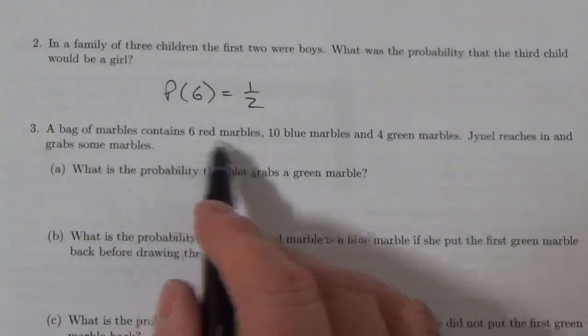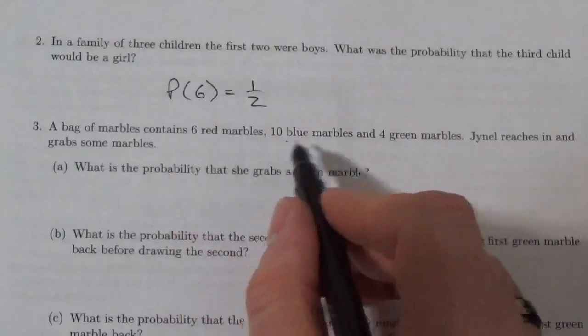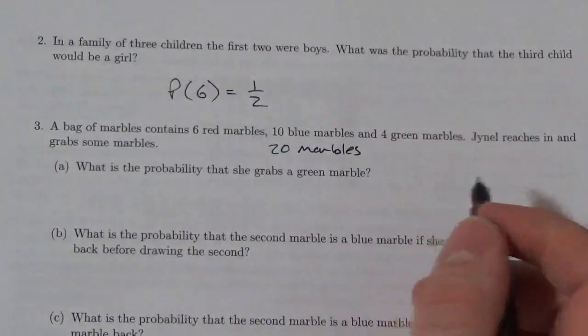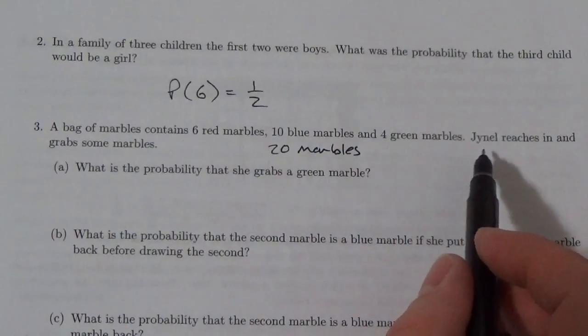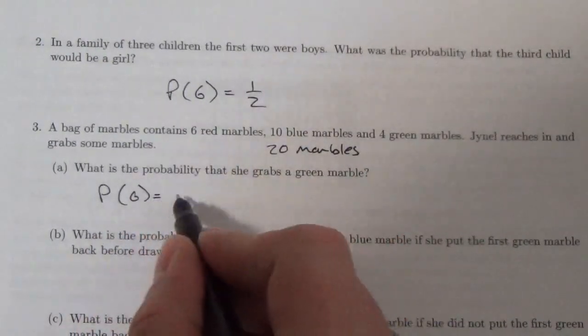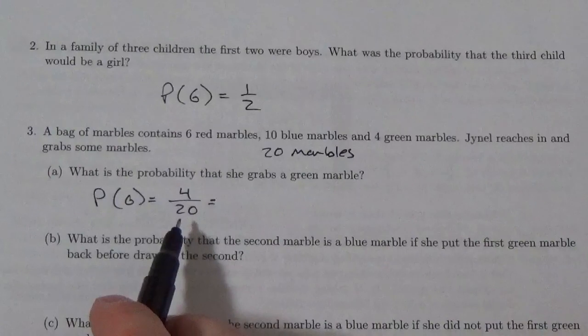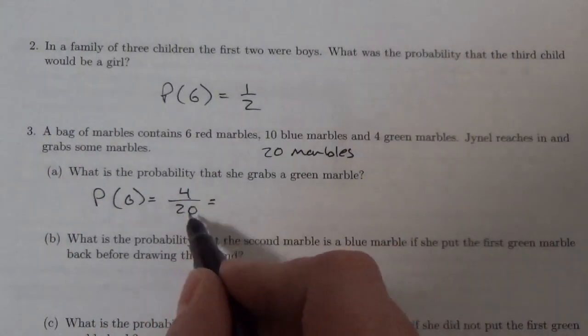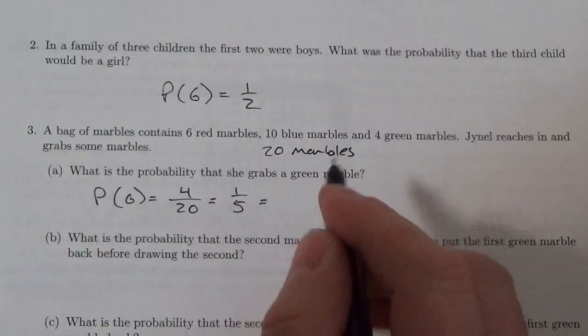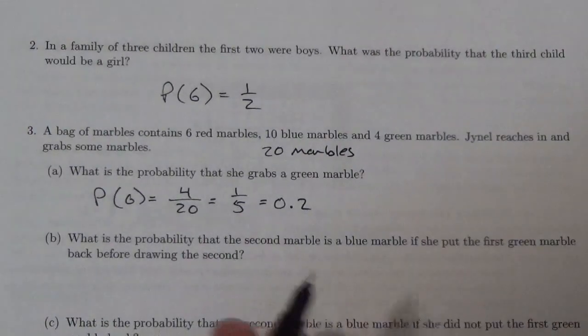A bag of marbles contains six red marbles, ten blue marbles, and four green marbles. We've got 20 marbles total. Janelle reaches in and grabs some marbles. What is the probability that she grabs a green marble? The total is 20, and there are four green marbles. Four out of 20 reduces to one out of five, or 0.2. So really there's a 20% probability that she's going to get a green.